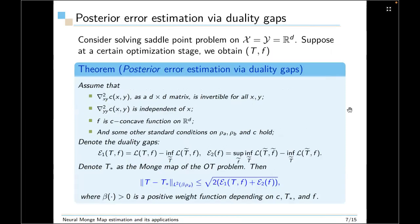Next is a posterior error estimation by duality gaps. So in this theorem, we consider both the space are in the same dimension, R^d. And suppose at a certain optimization stage, we obtain T and F. So here we assume that the second-order partial derivative with respect to x and y as a matrix is invertible. And the second-order partial derivative with respect to y is independent of x. And F is a C concave function on R^d and some other standard conditions on ρ_A, ρ_B, and C hold. Then we define the duality gaps E1 equals to L(T, F) minus infimum of T̃ L(T̃, F). And then E2 equals to the ultimate saddle-point value minus infimum of T̃ L(T̃, F). Now I denote T* as the Monge map of the OT problem.